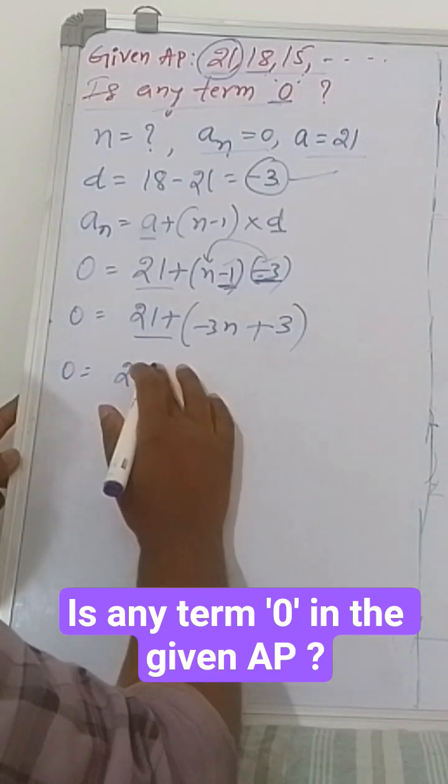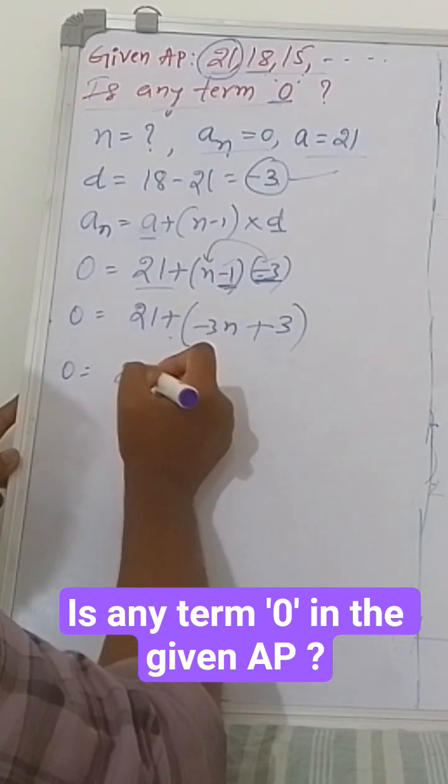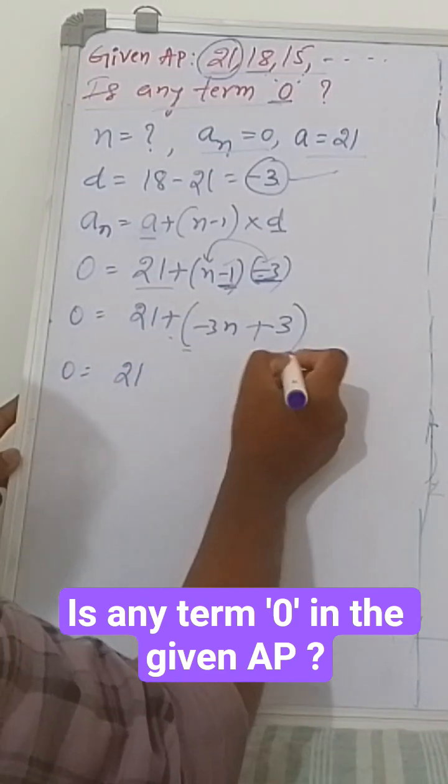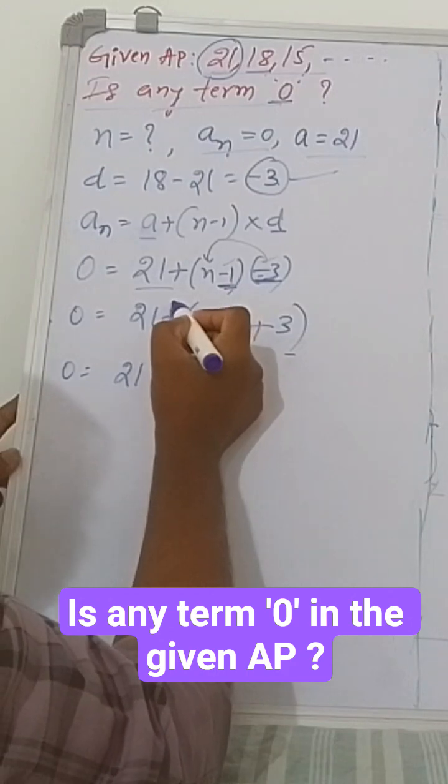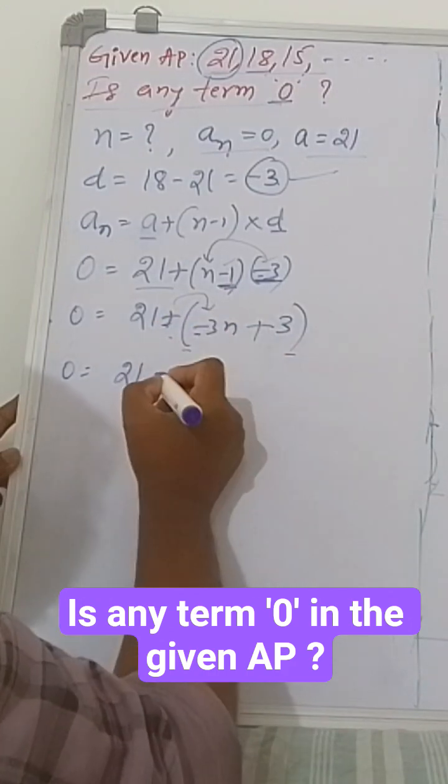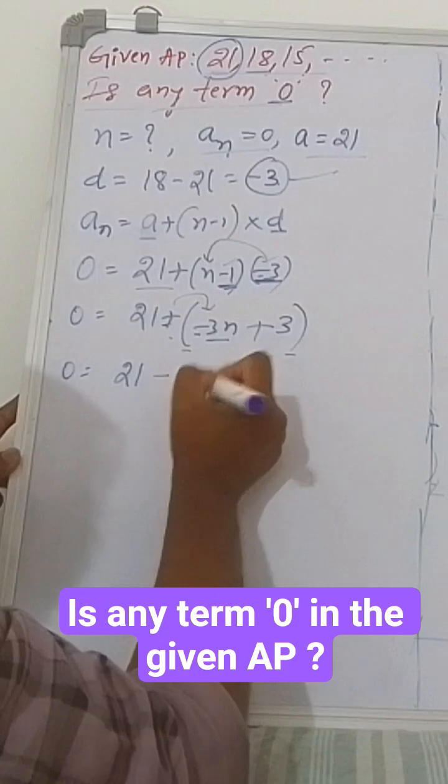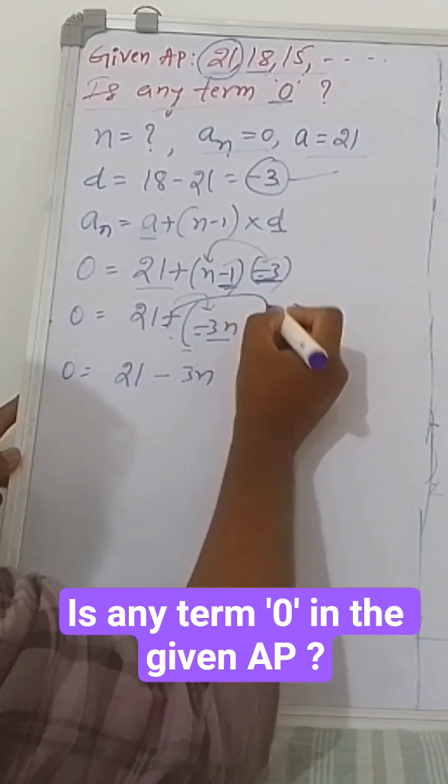Before that, write 21. Now remove the bracket. Distribute the sign: plus into minus is minus, so minus 3n. Plus into plus is plus 3.